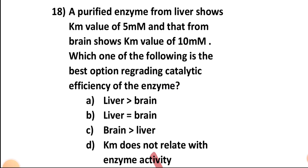Question number eighteen: A purified enzyme from liver shows a Km value of 5 millimolar, and that from brain shows a Km value of 10 millimolar. Which is the best option regarding the catalytic efficiency of the enzyme — greater in brain, greater in liver, equal in both, or Km is not related to enzyme activity?